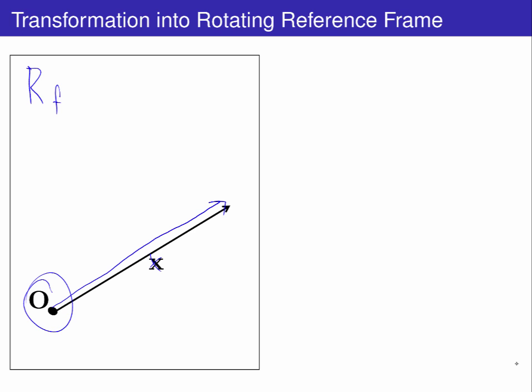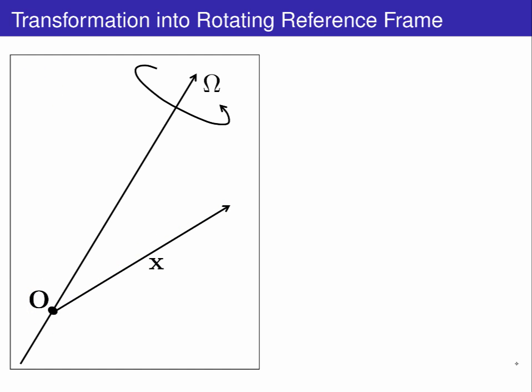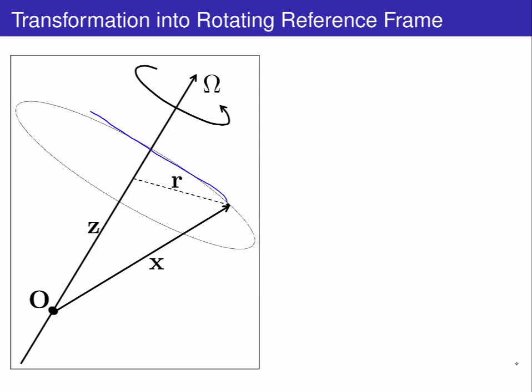Now consider a second frame of reference. This one is rotating about some axis that coincides with our arbitrarily located origin O. The rotation rate about this axis is omega. Now the vector x is composed of two vectors relevant to this new frame of reference. x is composed of an along-axis component z and an off-axis component r, which is also the radial distance from the axis of rotation. This decomposition of x into its along-axis and off-axis terms introduces a new vector cross-product, omega cross x, which is orthogonal to both the radius r and the axis of rotation omega.